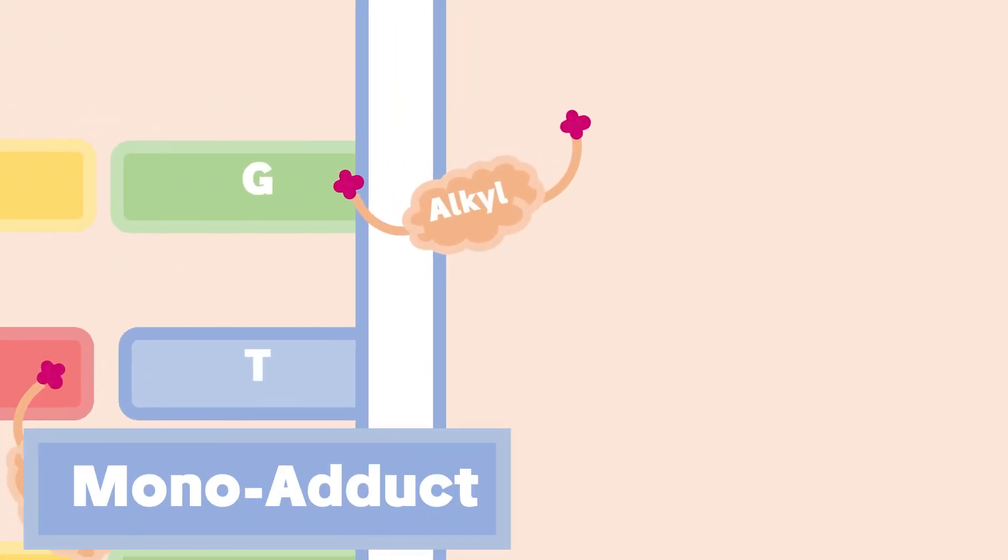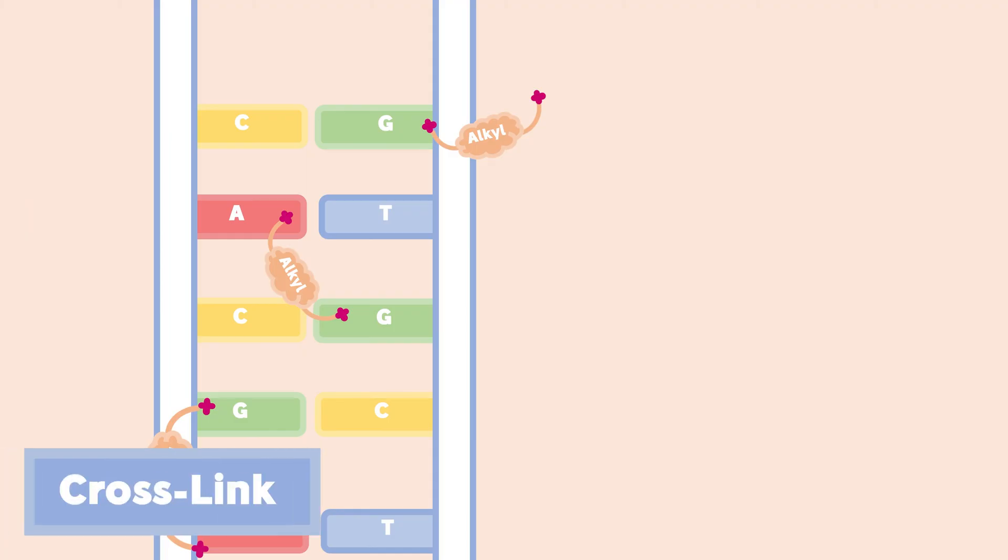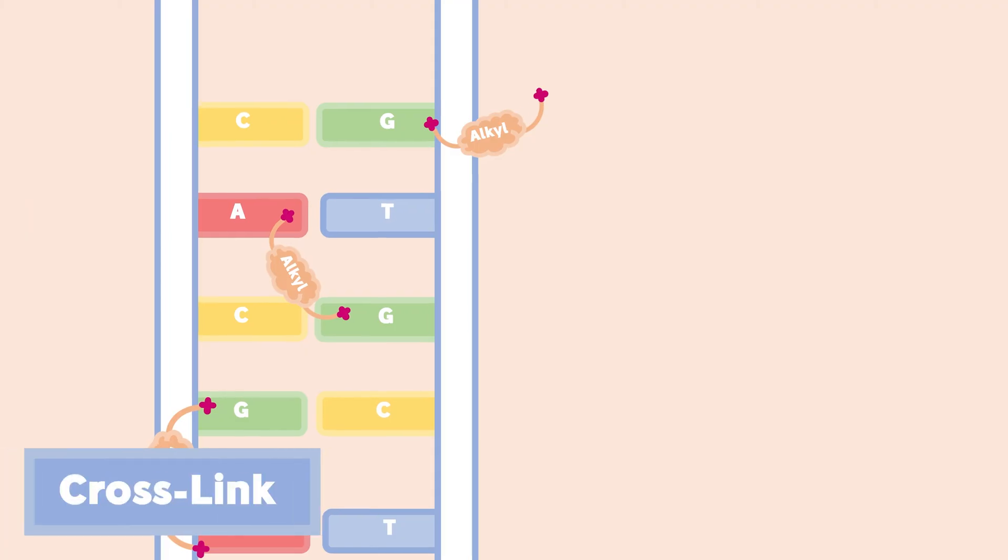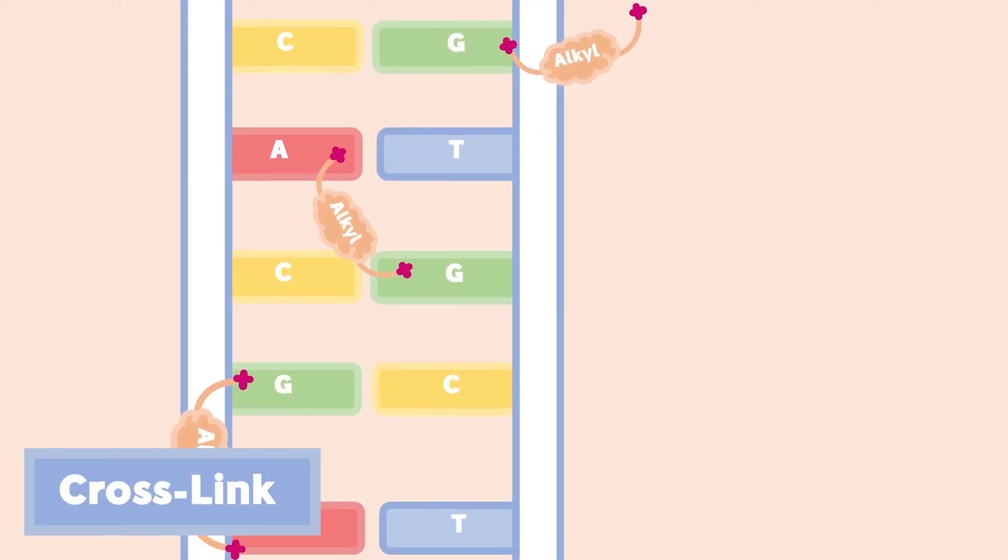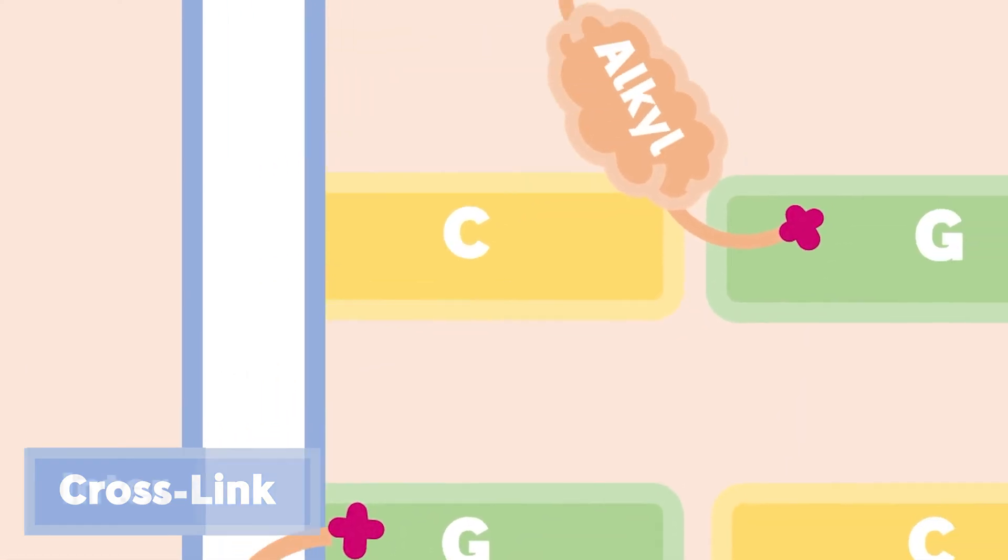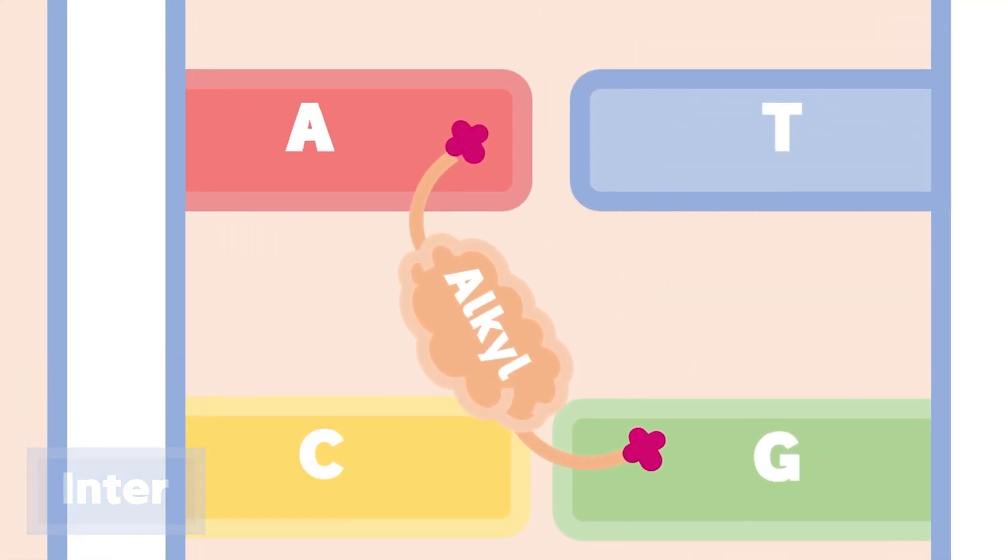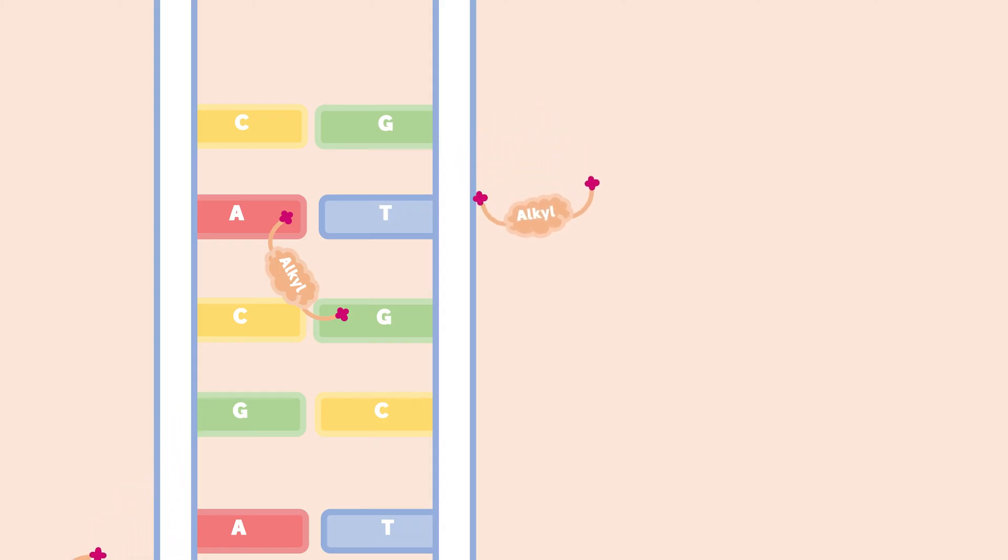This adduct can be a mono-adduct or a cross-link between two nucleotides that can be either on the same strand or between two opposite strands. The bifunctional alkylating agents, which have more than one reactive alkyl group in the same molecule, are more lethal to the cell, as their cross-links do not allow the double-strand separation,